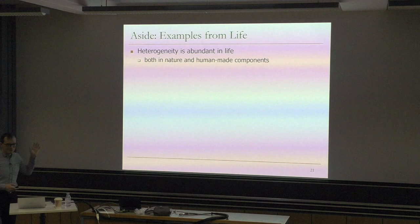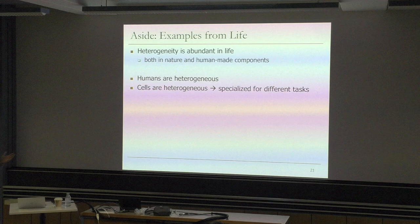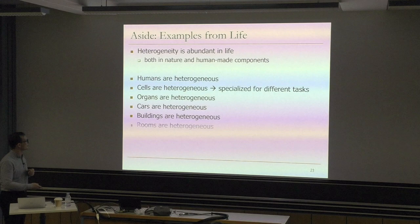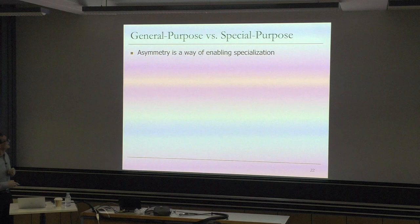Clearly there are examples of heterogeneity from life - in nature and human-made components we see a lot of heterogeneity. Humans are heterogeneous - cells are heterogeneous and specialized for different tasks. Organs, cars - whatever you see outside is heterogeneous. Even here in this room you see heterogeneity. I think this is a key point: we cannot talk about heterogeneity without talking about general purpose versus special purpose. General purpose clearly caters to many workloads, while special purpose in the extreme sense means you can execute only one thing on it.